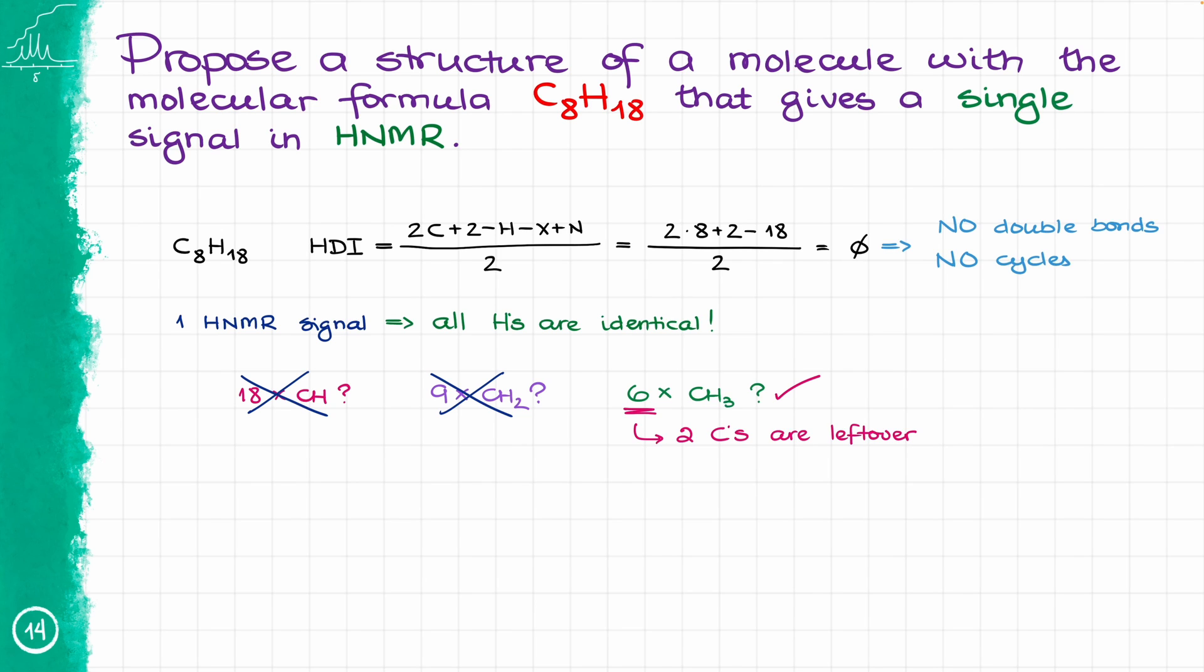So I have six CH3 groups. One, two, three, four, five, six, and I also have two carbons that do not have any hydrogens on them. So it's going to be carbon number one and carbon number two. Now, by taking all these building blocks together, all these pieces, and combining them together, there is physically only one way how I can put it all together to make one single molecule, which is going to be a molecule that looks like this, with a couple of carbons in the middle, and then we have six CH3s around, all of which are going to be absolutely identical, and therefore they're all going to be giving you the same signal in HNMR.